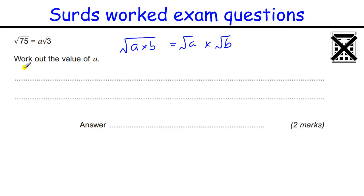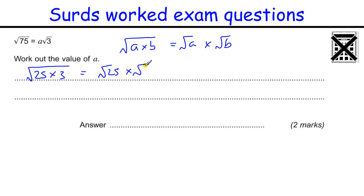The square root of 75. When we're trying to simplify values and take factors out, we've got to look for square numbers. 75 is 25 times 3. So that's the square root of 25 times the square root of 3. The square root of 25 is 5, so that gives us 5 root 3, meaning A equals 5.